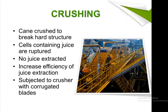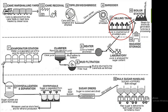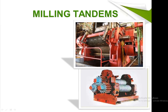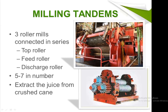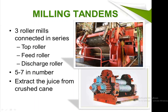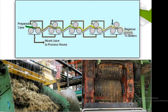After crushing, the feed is sent to the milling tandems — a machine with three roller mills connected in series: top roller, feed roller, and discharge roller. There are five to seven mills in number. They extract juice from the crushed sugarcane. Prepared cane enters the milling tandems, passes through three machines, and produces juice and an extra material called bagasse.